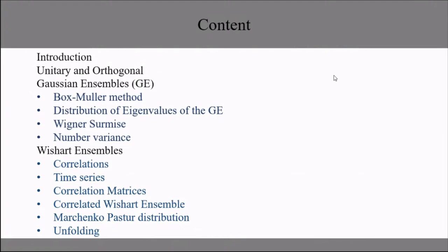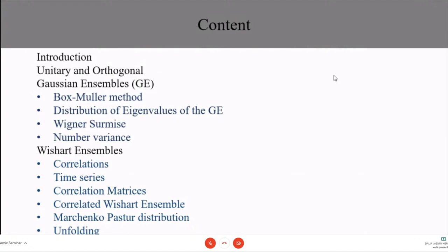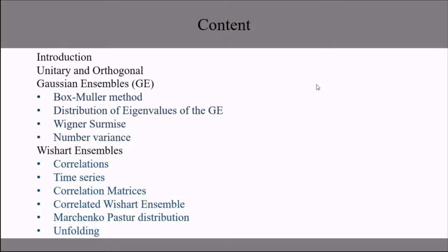What we will see today is a brief introduction about what random matrix theory is — the definition and related concepts, unitary and orthogonal ensembles, and the Box-Muller method, which is a method to produce Gaussian entries. We will also look at the distribution of eigenvalues of the Gaussian ensembles, and the Wigner surmise distribution.